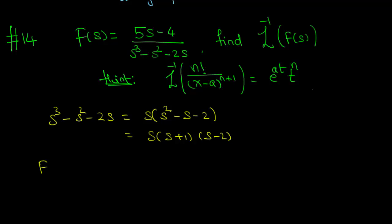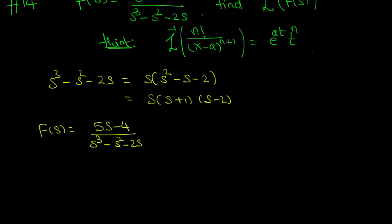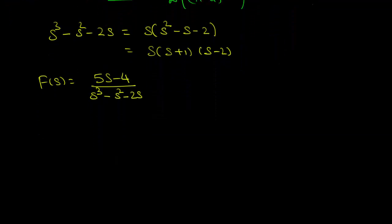So f(s) is (5s minus 4) divided by (s cubed minus s squared minus 2s). To do partial fractions, we write this as a sum of three fractions: A over s, plus B over (s plus 1), plus C over (s minus 2).